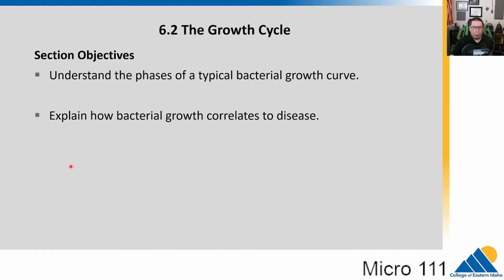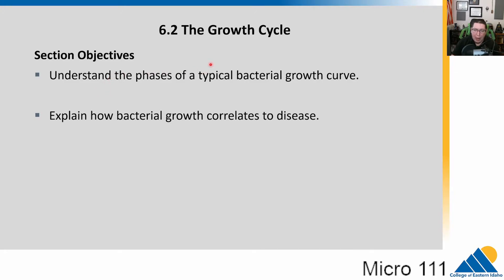So 6.2 is about how bacteria actually grow. We've talked about how we grow them, but what are they actually doing in that growth? We need to understand the phases of typical bacterial growth — what we call a growth curve — and then we'll look at how bacterial growth correlates with disease.